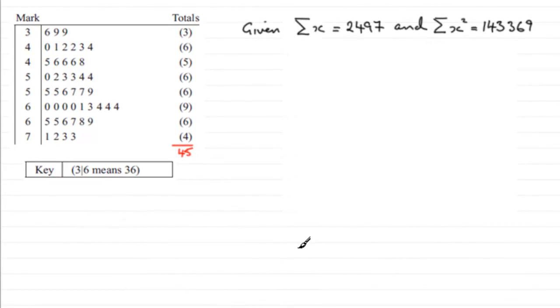In the next part we're given the summary statistics for the data, the marks of these students, and we're asked to find the mean and the standard deviation of these marks. To find the mean, the mean which I'm going to call X bar is equal to the sum of all your observed values divided by however many you've got.